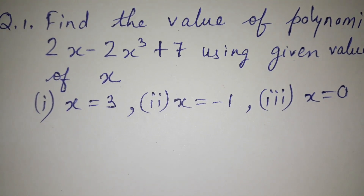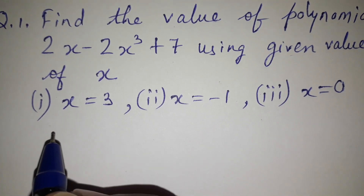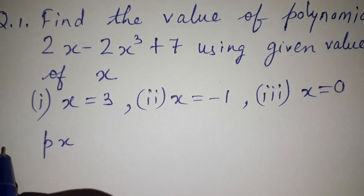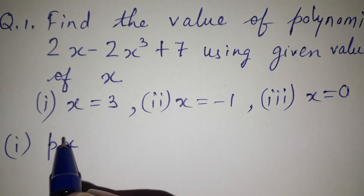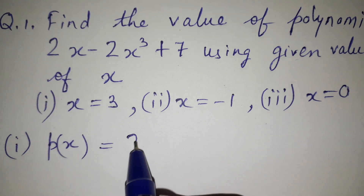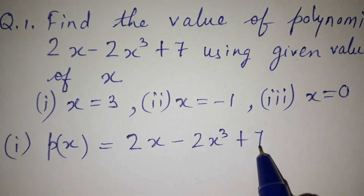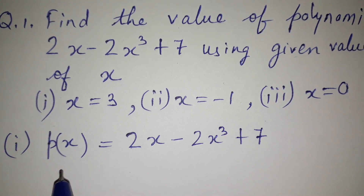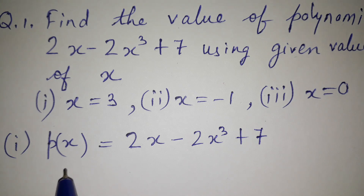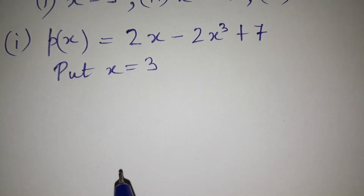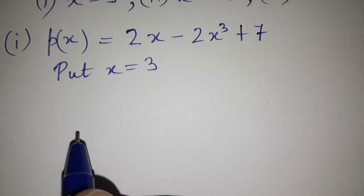Let's start the problem. First, we write the polynomial as p(x) equals 2x minus 2x cube plus 7. For the first part, we put x equal to 3, so in this polynomial we substitute x equals 3.